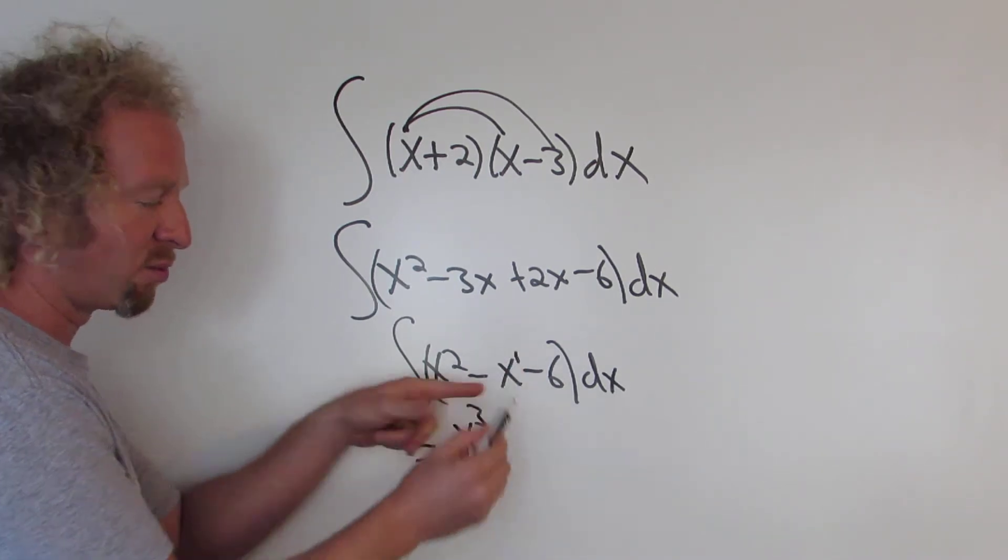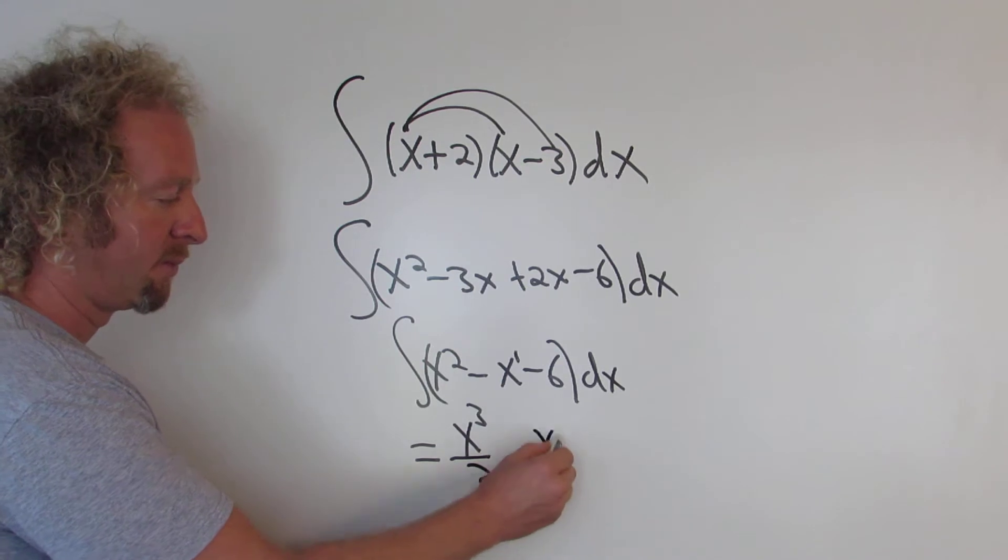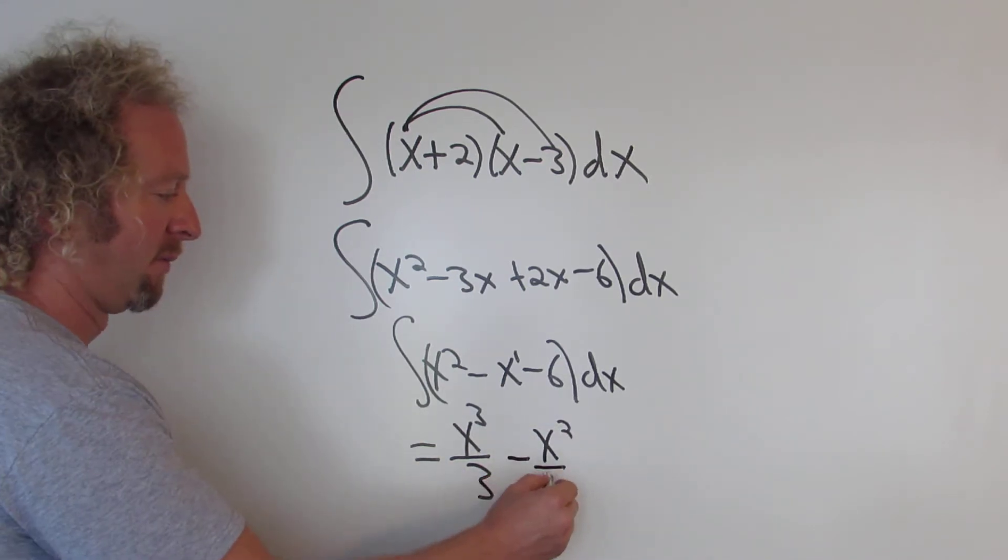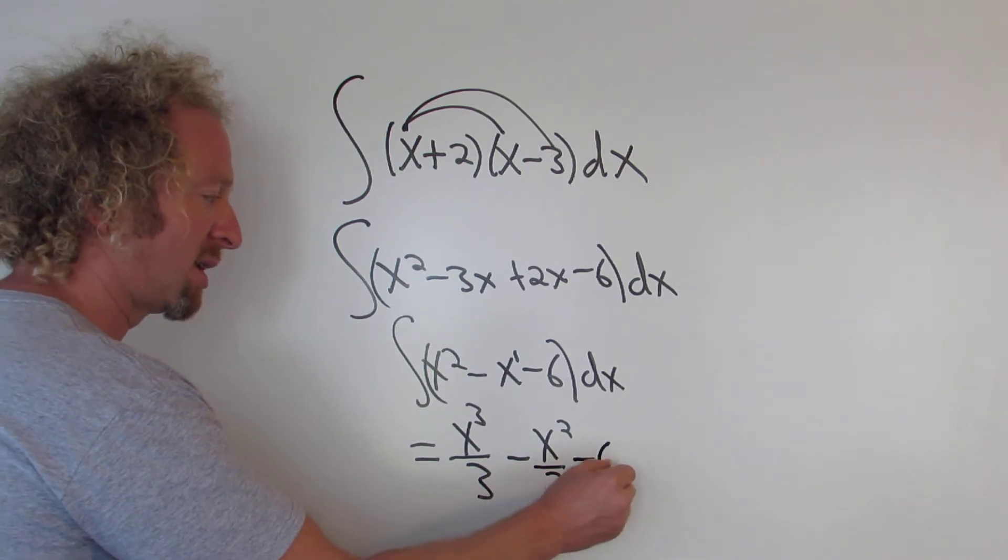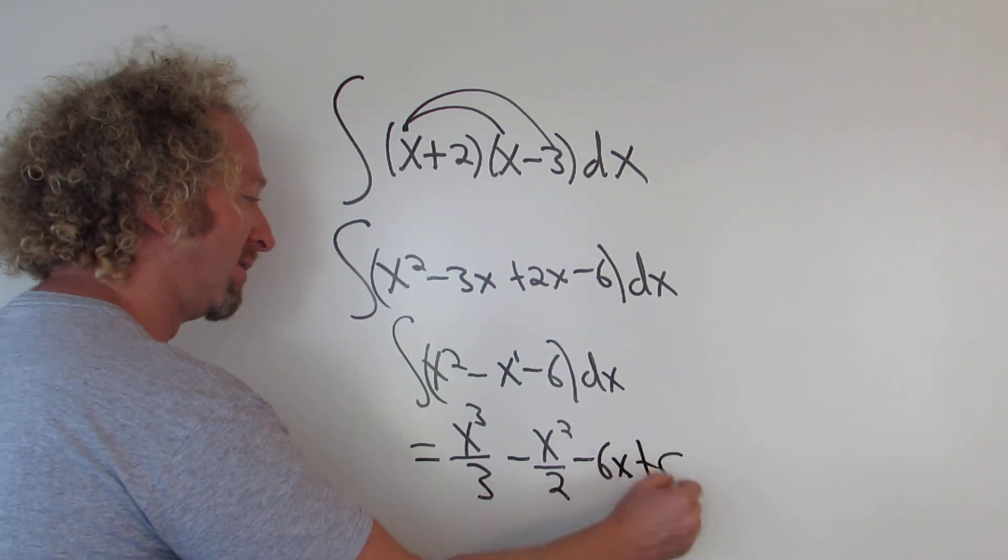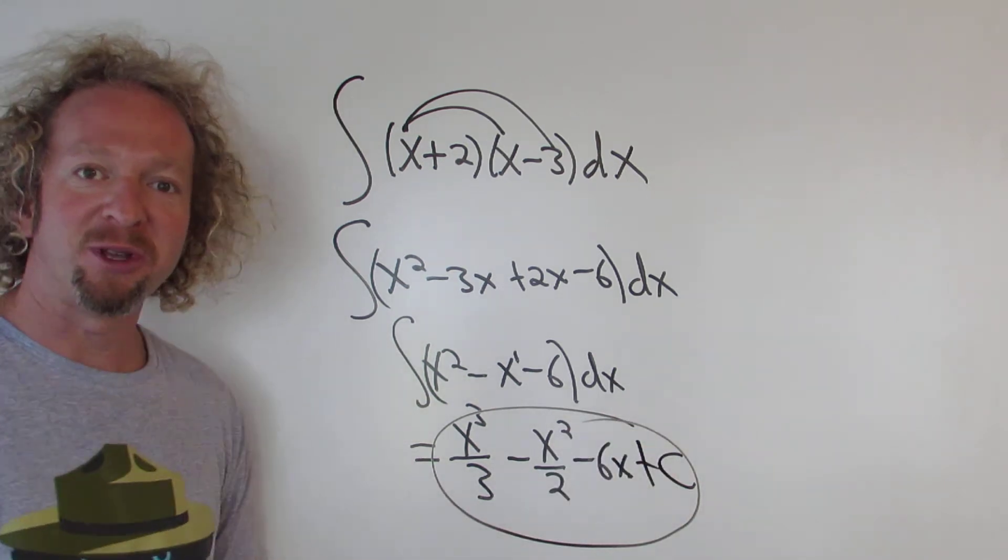Here there's a 1. The rule is you add 1. 1 plus 1 is 2, and then you divide by 2. Whenever you have a number by itself, you just attach the x, so minus 6x. And don't forget the arbitrary constant of integration. And that's it. I hope that made sense.